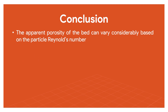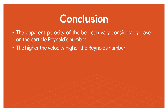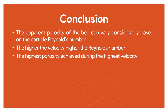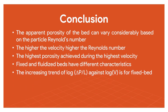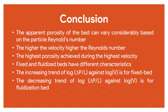In conclusion, the apparent porosity of the bed can vary considerably based on the particle Reynolds number. The velocity increases with the increase of the Reynolds number, so the highest porosity is achieved at the highest velocity. The fixed and fluidized beds have different characteristics. The increasing trend of log(ΔP/L) against log(V) is for the fixed bed, while the decreasing trend is for the fluidized bed, because the drag activity in a fixed bed is higher than in fluidization. That is all from us. Thank you.